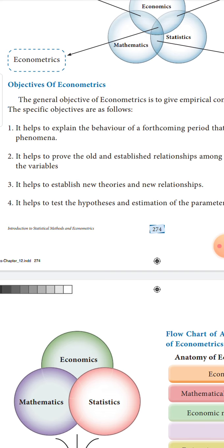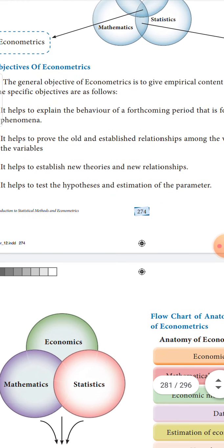Next, econometrics helps to prove old and established relationships among variables. Ancient economists propounded various theories, and we need to establish the relationship between the variables taken for study and arrive at connections between them. It also helps to establish new theories and new relationships — not only learning about old theories but finding new relationships between variables studied by new economists.